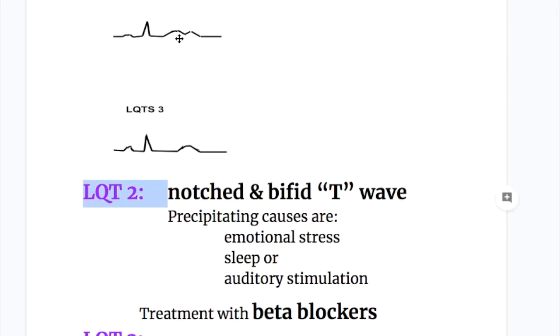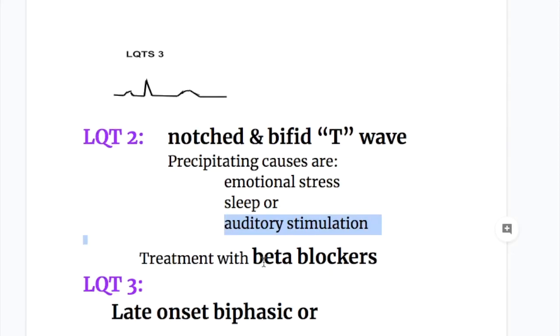The second type, LQT 2, has long QT interval plus a notched and bifid T wave. The precipitating causes are emotional stress, sleep or auditory stimulation like sudden sound. So emotional stress is also responsible for LQT 1, but here it's sleep and auditory stimulation also. Treatment is also the same: beta blockers. So treatment for LQT 1 and 2 is the same - beta blockers.